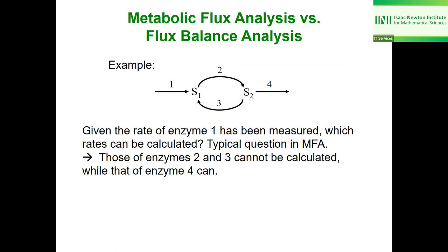Assume we have measured the rate of the first reaction. An interesting question is: which other rates can be calculated? At steady state — and in most cases we assume steady state conditions — although reactions one and four are not adjacent, the rate of reaction four can be calculated because it equals reaction one at steady state, whereas rates two and three cannot be calculated unless additional constraints are included. This is a typical question in MFA — metabolic flux analysis.